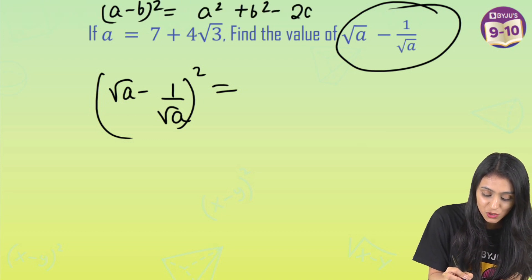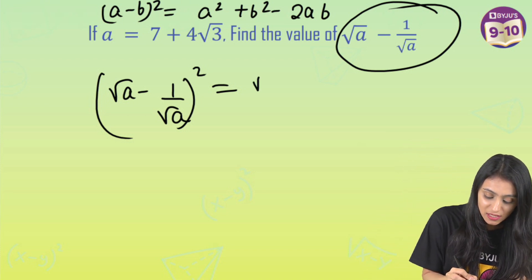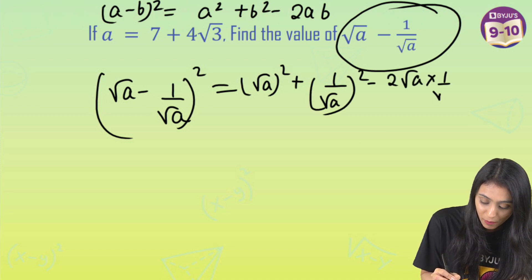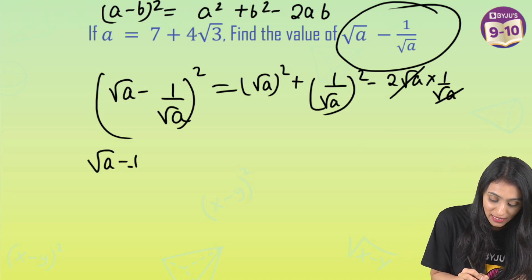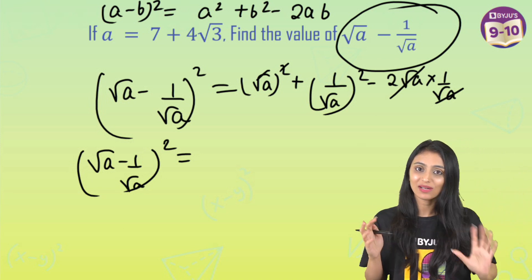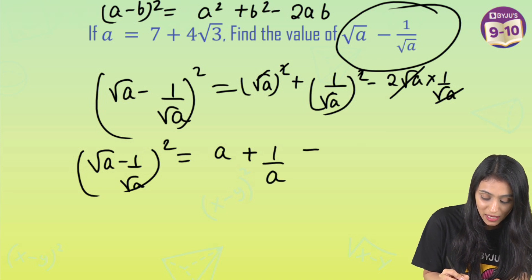Instead of a and b we have root a and 1 by root a, so this is simply going to be root a squared plus 1 by root a squared minus 2 times root a times 1 by root a. The last term cancels out, and what we're left with is: (root a minus 1 by root a) whole square equals a plus 1 by a minus 2.